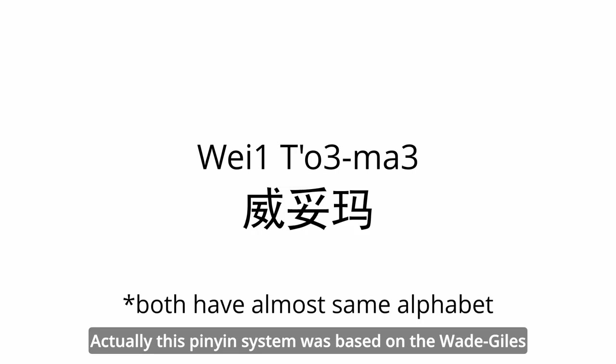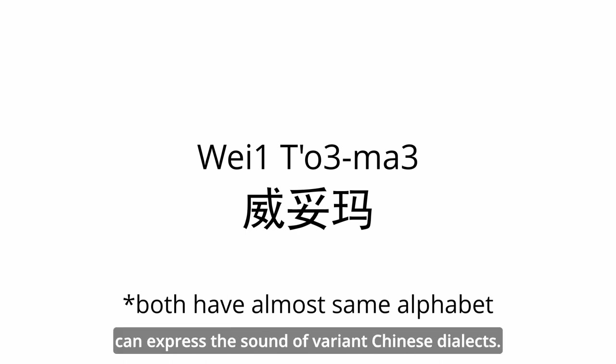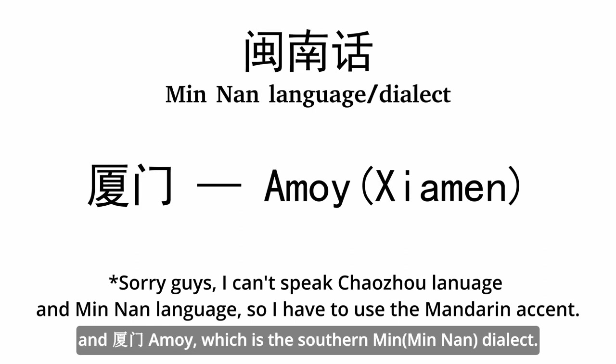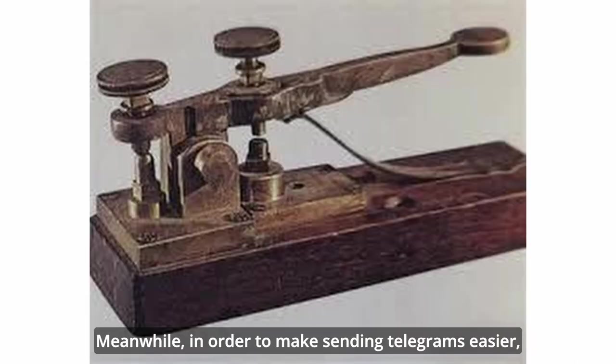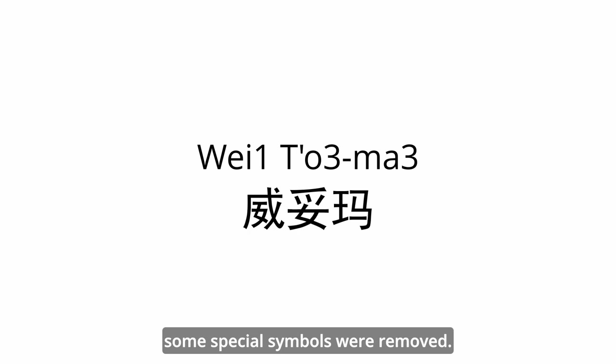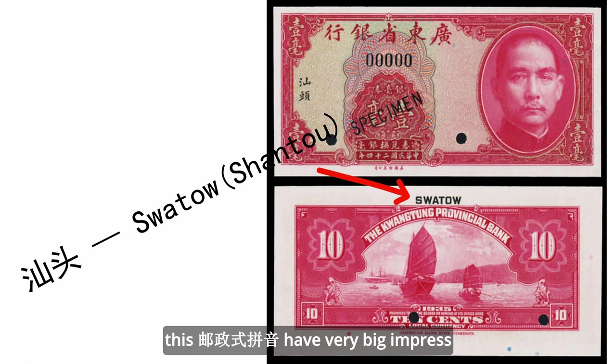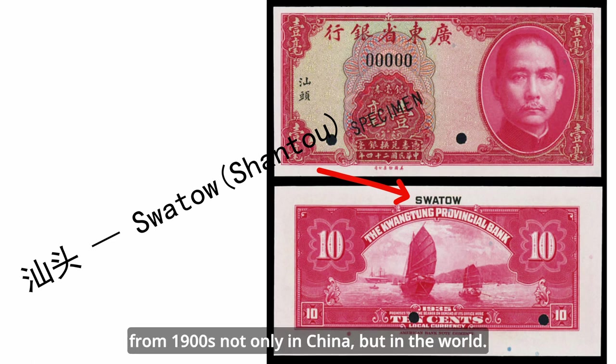Actually, this pinyin system was based on Wade-Giles, and after improving it, it could express the sounds of varying Chinese dialects, such as Shantou, which is the Chaozhou dialect sound, and Xiamen, which is the Southern Min dialect. Meanwhile, in order to make sending telegrams easier, some special symbols were removed. It is worth mentioning that this Yu Zheng Shi Pinyin had very wide usage from the 1900s, not only in China but in the world.